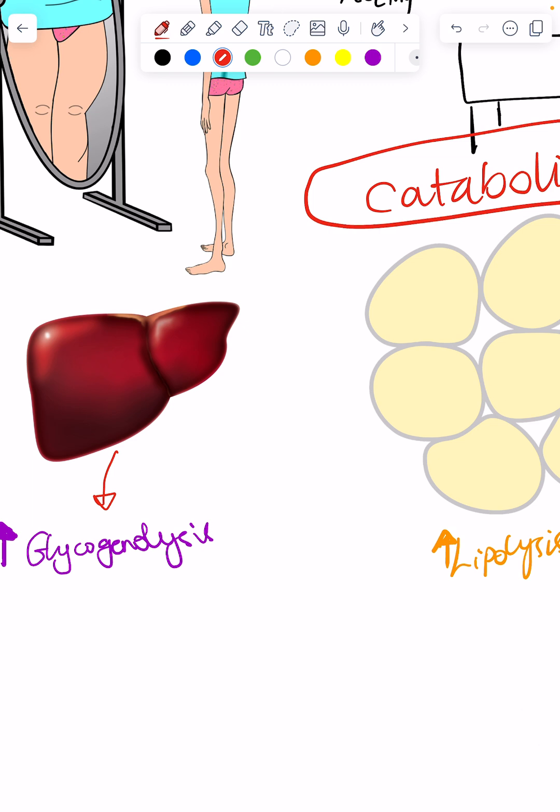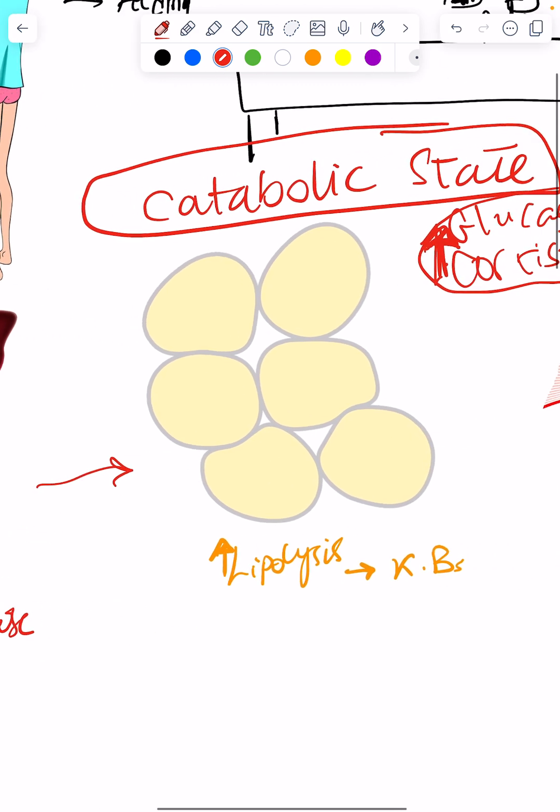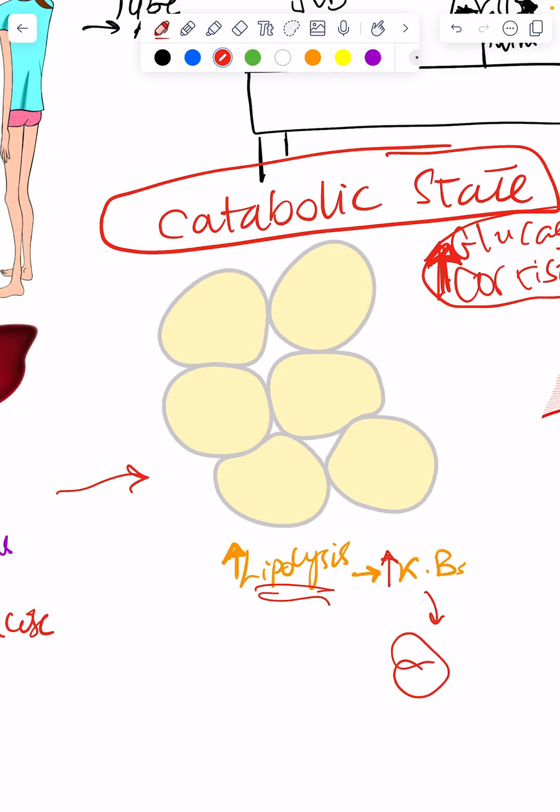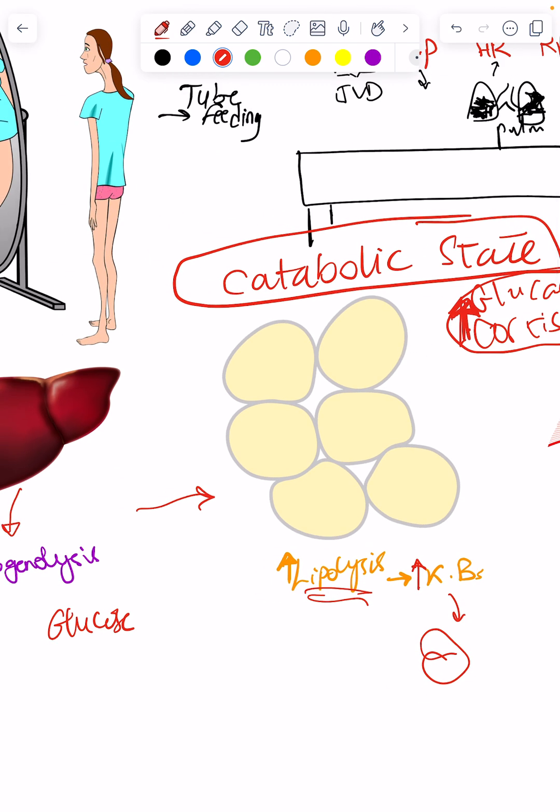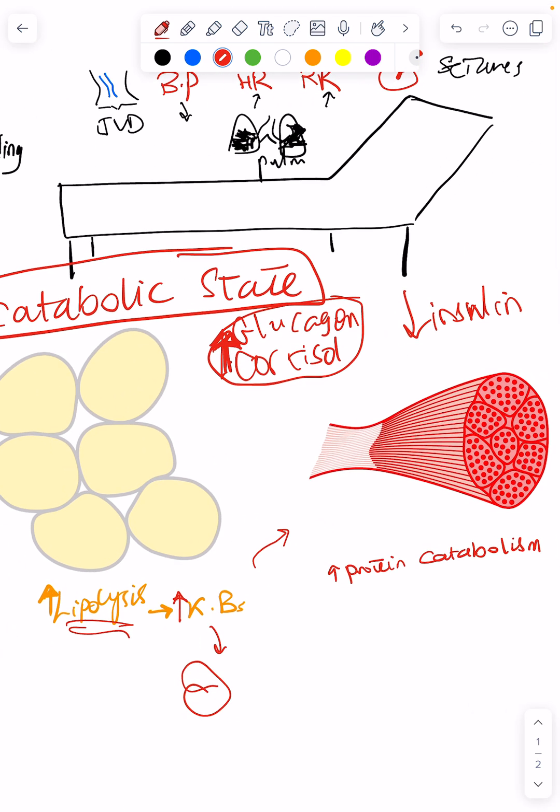And then when carbs are over, when we're done with our carb stores, to produce glucose for the brain, then we switch to breaking down fat. That's lipolysis. And then fat breakdown leads to ketone bodies that would be used by the brain. That means that what the body is doing is saving all the ketone bodies for the brain to use as energy and less for the muscle, so the muscle will starve and so we will start breaking down as well. That's called proteolysis.